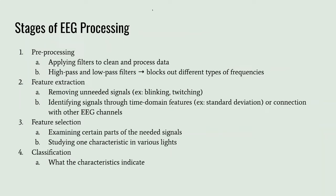The stages of EEG processing: First is preprocessing, which is applying filters to clean and process the data to block out different types of frequencies. Second is feature extraction — removing unneeded signals like blinking and twitching, and identifying signals through time domain features such as standard deviation or connection with other EEG channels. Third is feature selection, examining certain parts of the needed signals and studying one characteristic in various slides. The last is classification, which determines what the characteristics indicate.